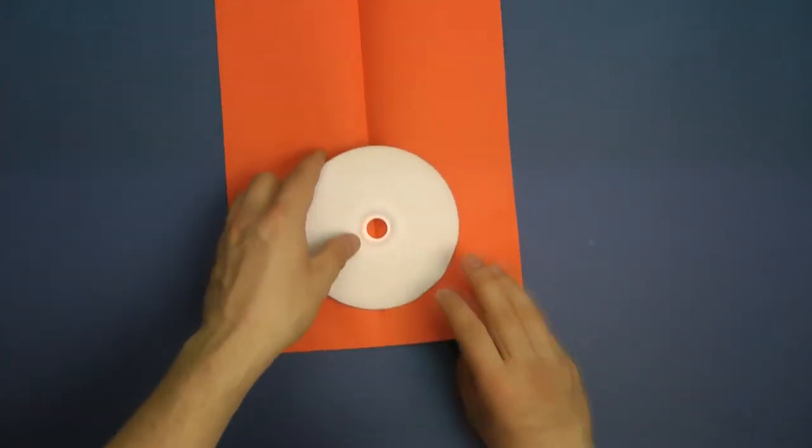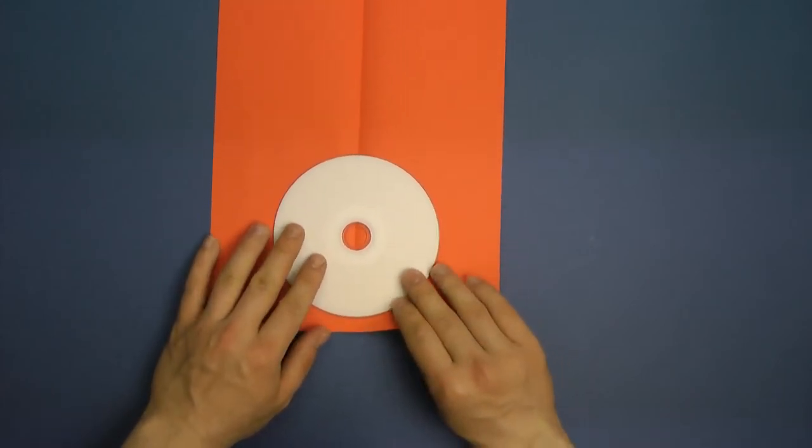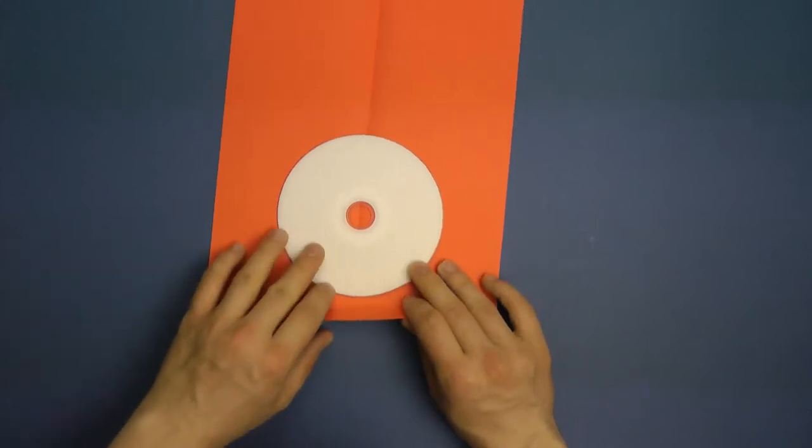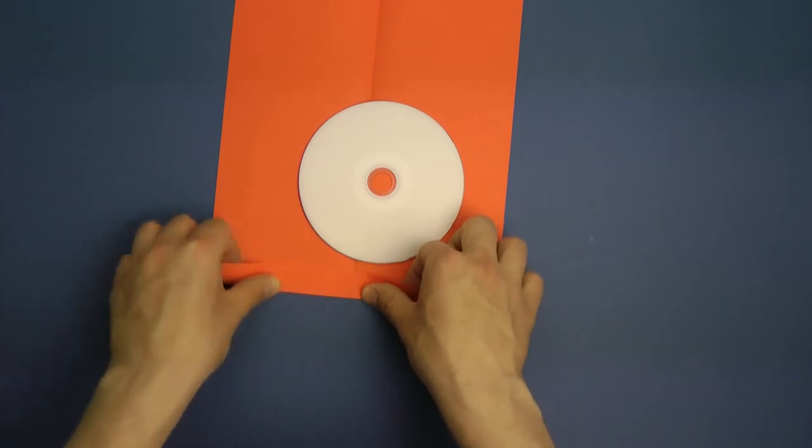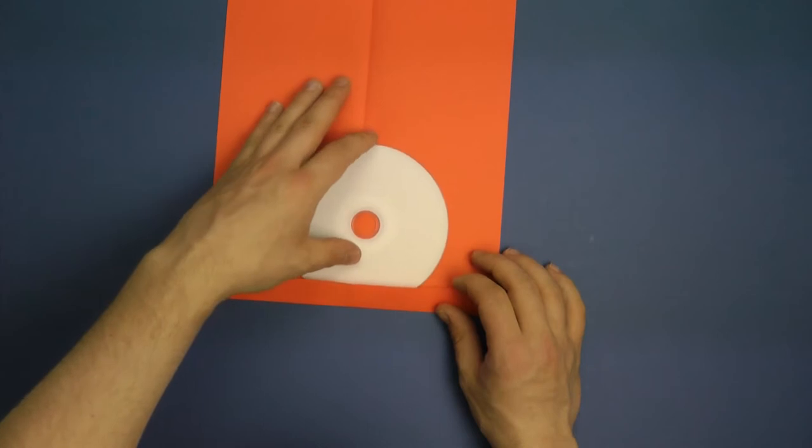So now we need the CD, we put it right into the center at the bottom and then like about a finger wide we'll fold up a bit. Just like that. And that is where our CD will sit in a bit, like this.